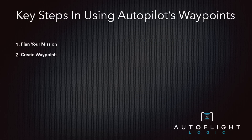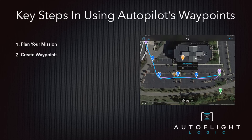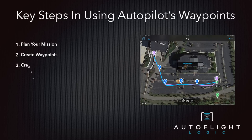Second, you're going to want to create your waypoints — the points that define where the quadcopter is going and drive the path. Third, you're going to want to create your path. In Autopilot, you have the flexibility to not only fly straight from point to point, but use Bezier curves to fly curved, definable paths between points.